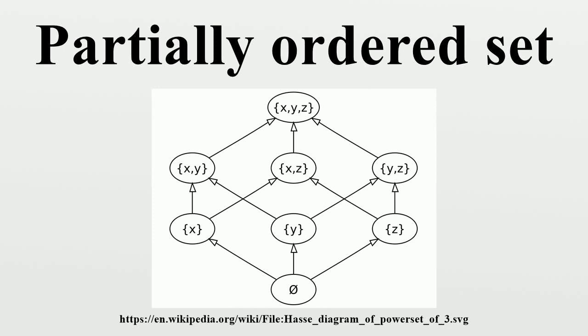Linear extension: A partial order ≤* on a set X is an extension of another partial order ≤ on X provided that for all elements X and Y of X, whenever X ≤ Y, it is also the case that X ≤* Y. A linear extension is an extension that is also a linear order. Every partial order can be extended to a total order. In computer science, algorithms for finding linear extensions of partial orders are called topological sorting.